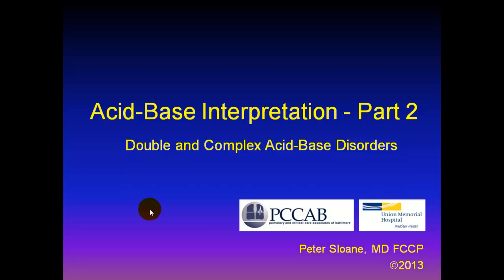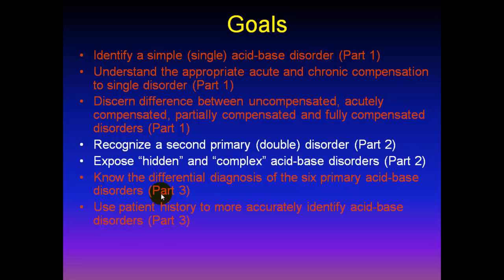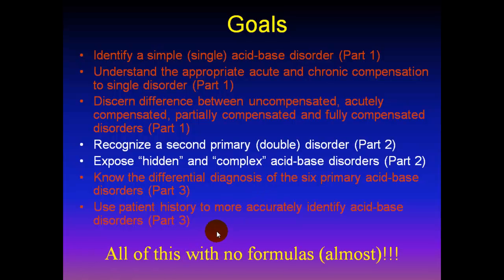If not, you'll definitely have some trouble following the current talk, so you may consider going back to reviewing the original part one before proceeding. In the first talk, we discussed simple acid-base disorders and their compensation. In this talk, we will learn how to recognize second primary or double disorders and how to expose hidden or complex disorders — all of this with no formulas once again.